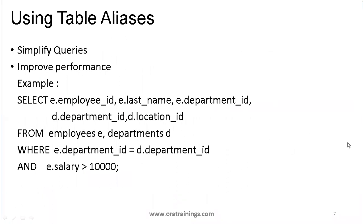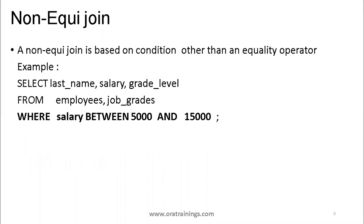Table aliases are best practice whenever you use tables, not only for joins. Within equi join, there are also chances you may need extra conditions beyond the join condition itself to filter the required data — using AND clauses or independent conditions. For example, we might fetch all employee and department data where the employee salary is greater than 10,000.